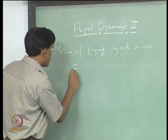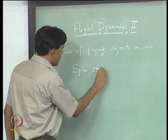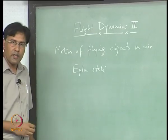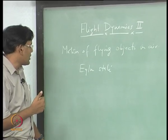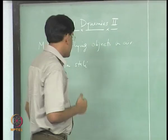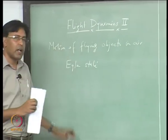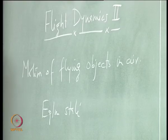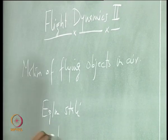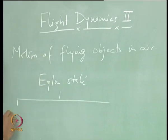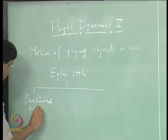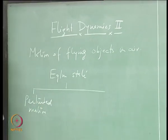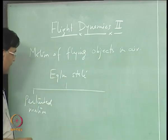So there is an equilibrium state where this object is flying. What we want to look at is what happens to this motion when a craft or any flying object is disturbed from this equilibrium state. So we are interested in looking at the perturbed motion of a flying object from a steady equilibrium flying condition.